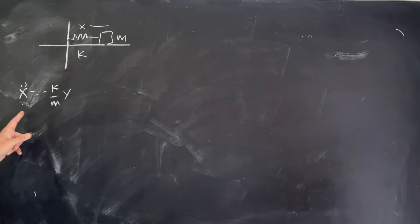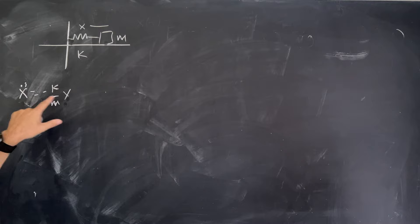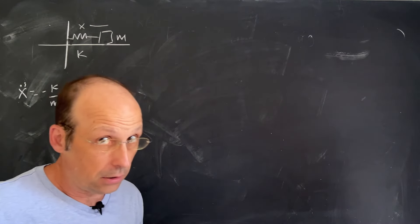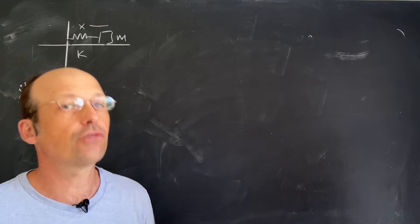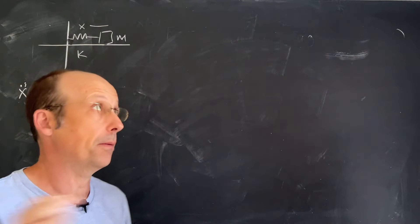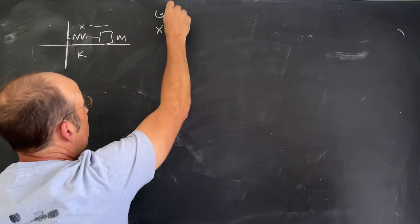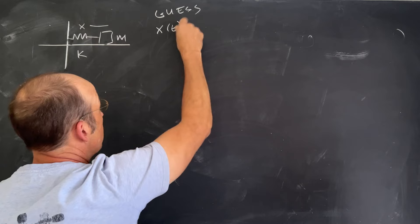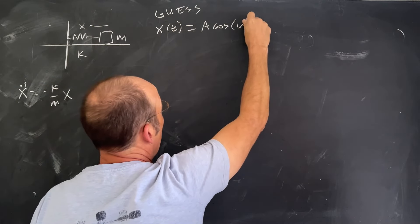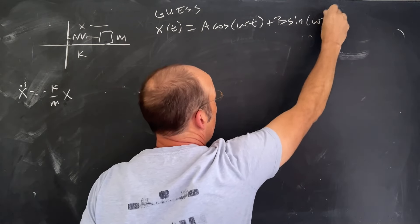We're looking for what function of x, if I take the derivative twice, gives me the same thing back with a negative constant. There are multiple solutions, but the most common is trig functions — sine and cosine. Both of those, if you take the derivative twice, you get the same thing back. So let's guess — and this is a guess — x equals A cosine(ωt) plus B sine(ωt).